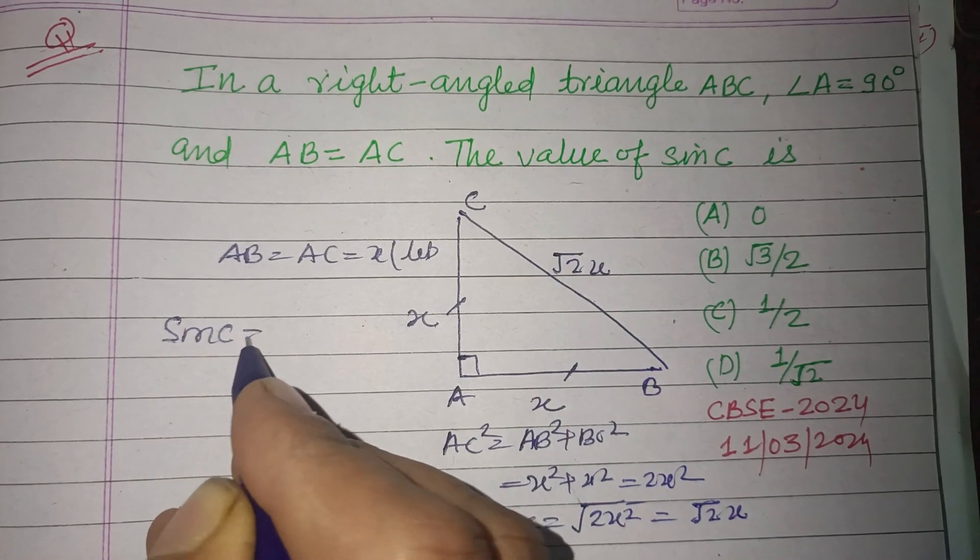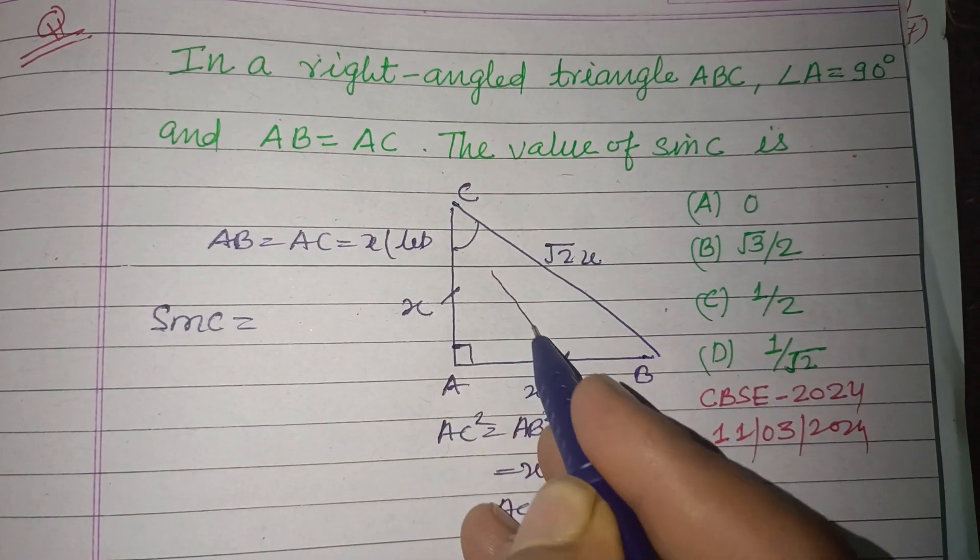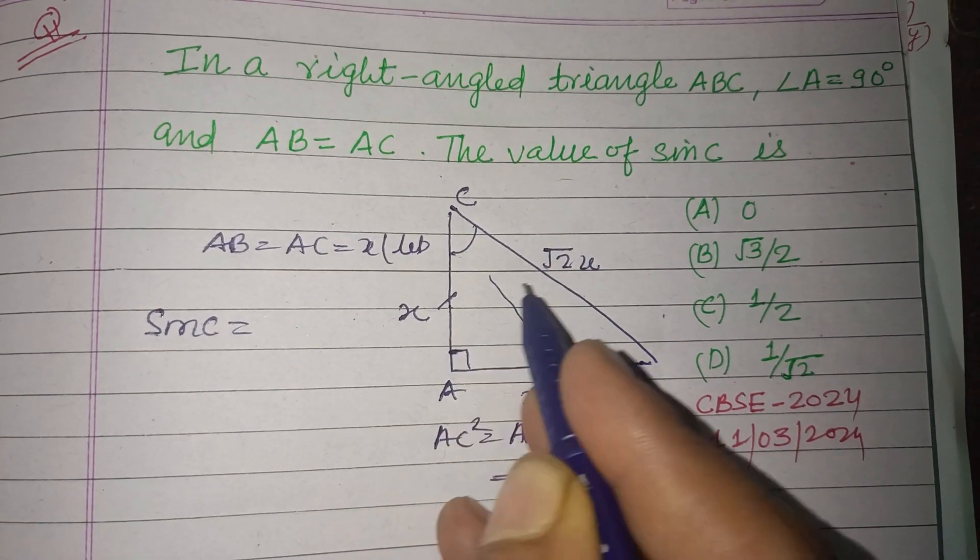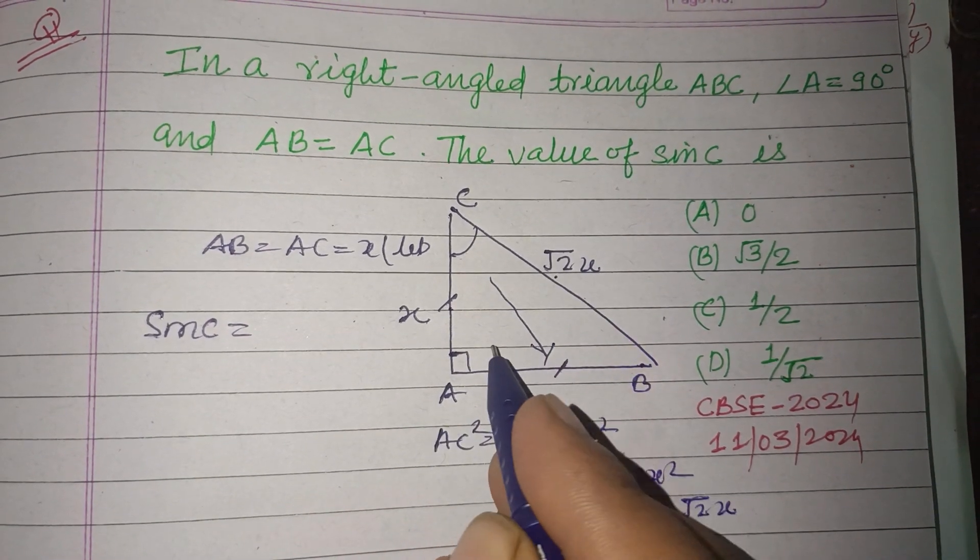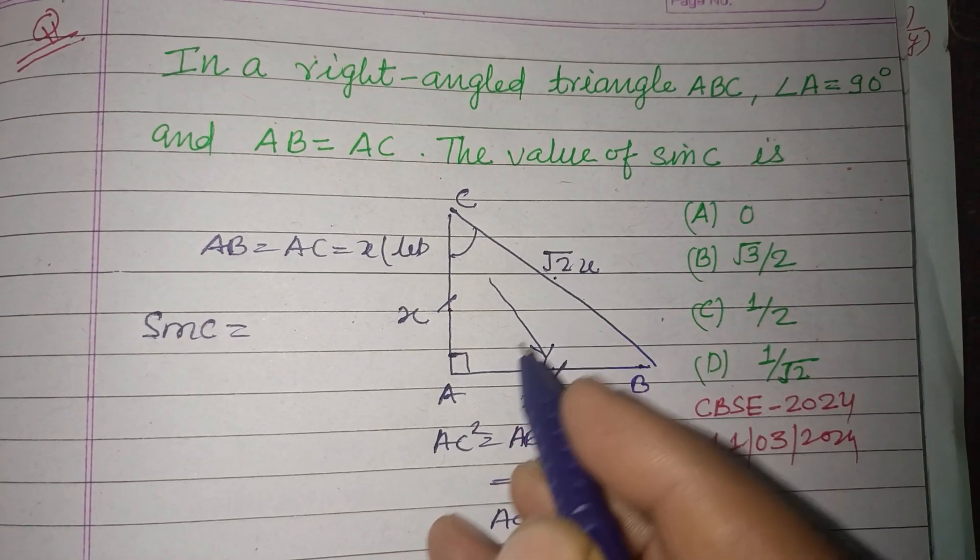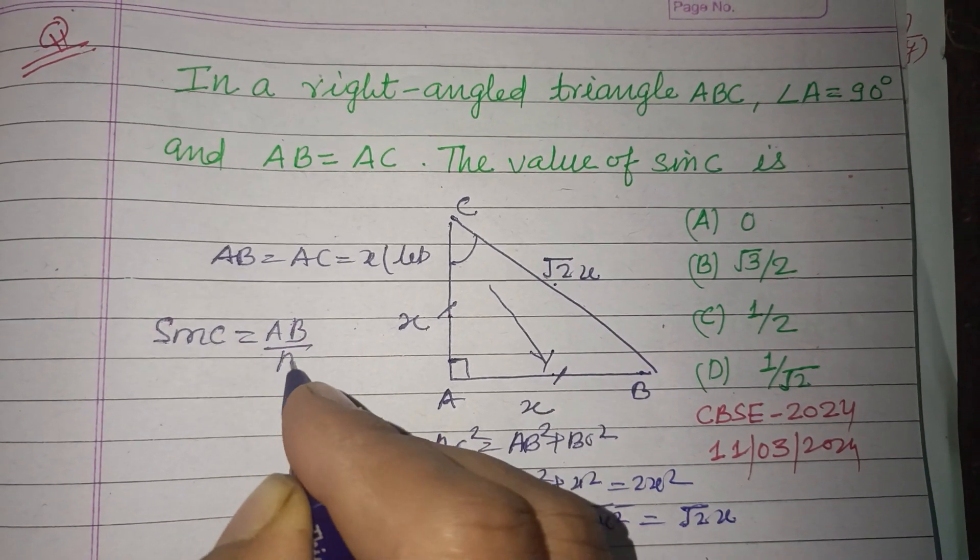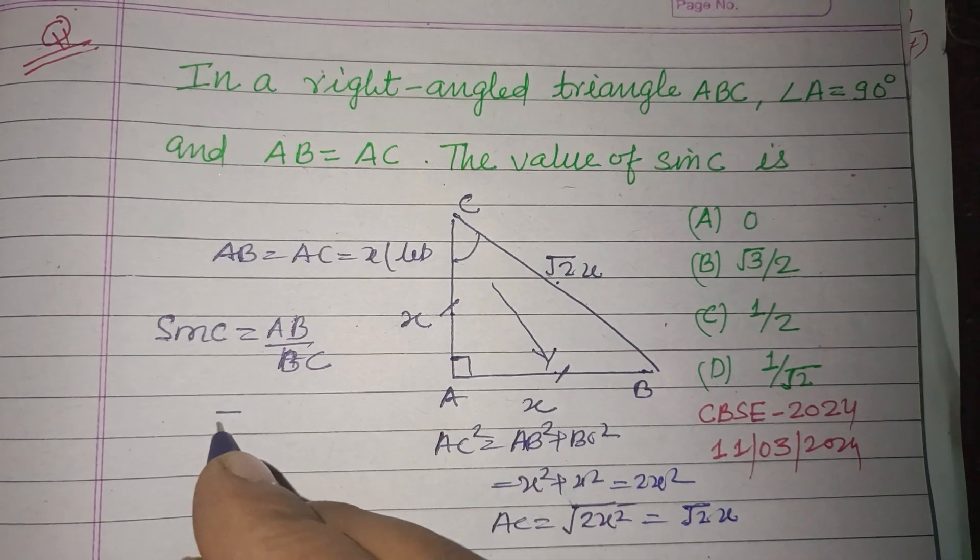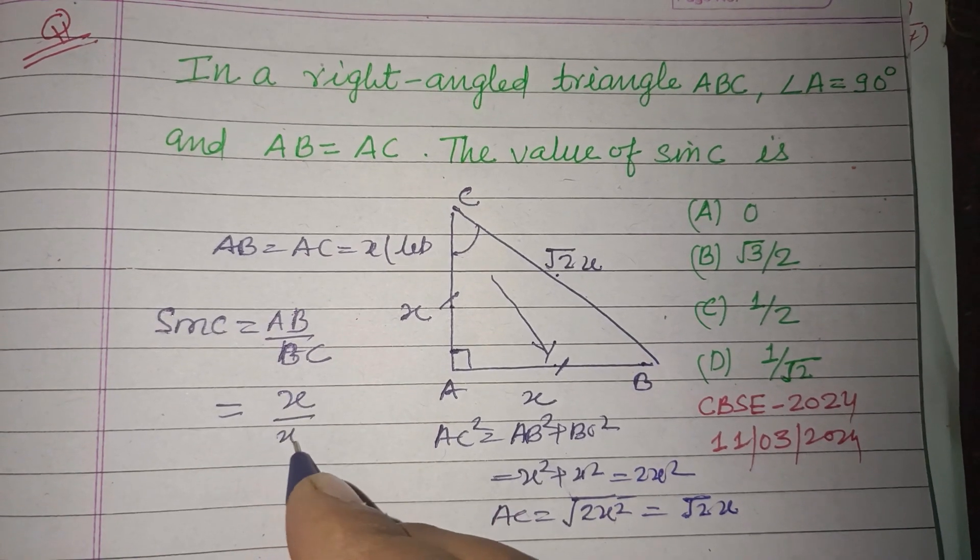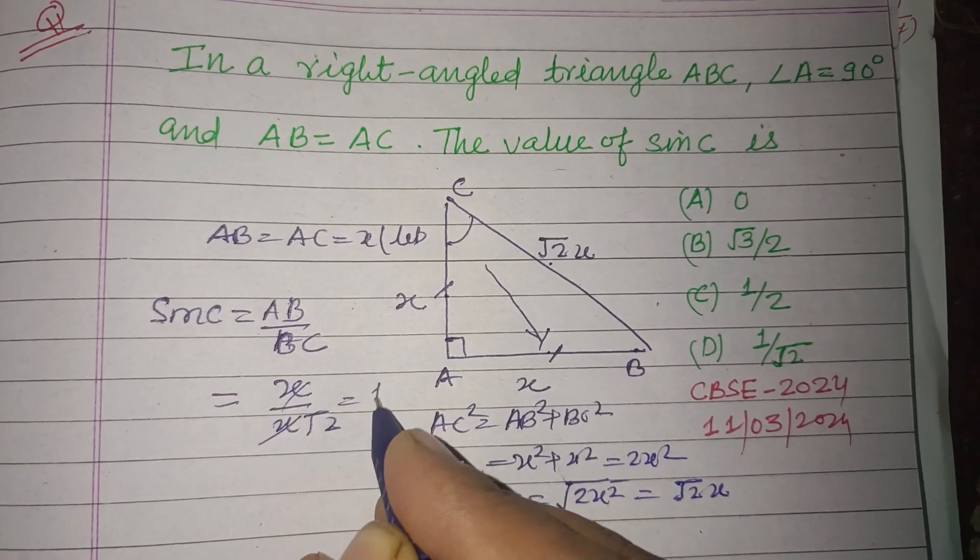So sine C: this angle has perpendicular, base, and hypotenuse. Sine C equals perpendicular over hypotenuse, AB over BC. That is x over x√2, so this is 1/√2.